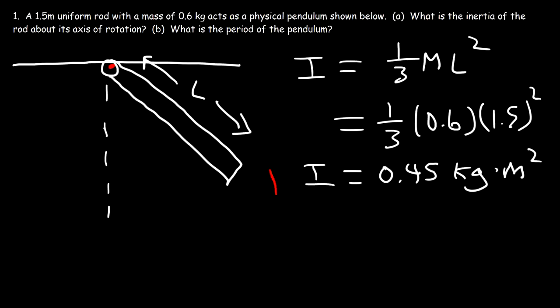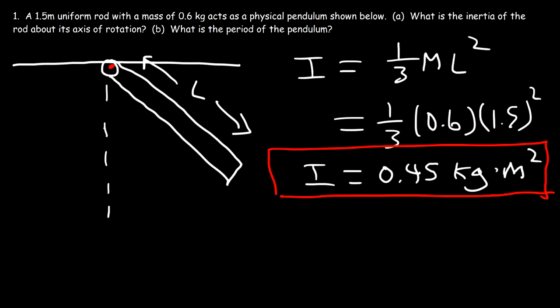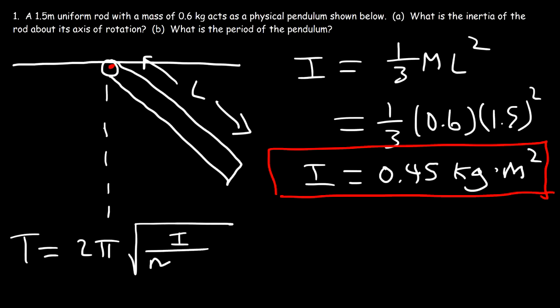That's the solution to part A. Now let's move on to part B: what is the period of the pendulum? The period of the pendulum is 2π times the square root of the inertia divided by the mass times the gravitational acceleration times D.